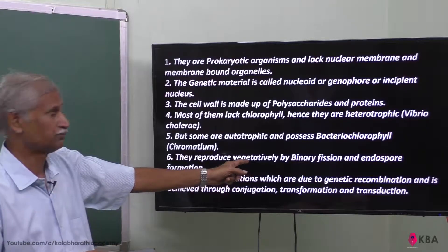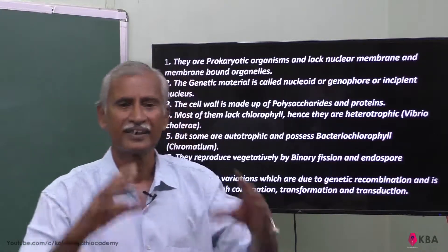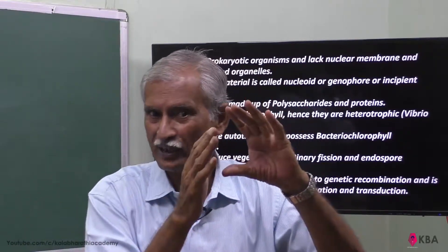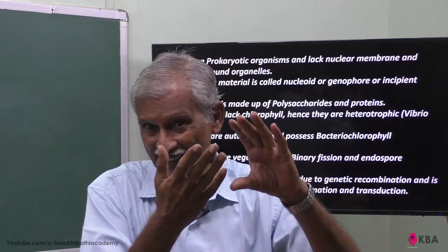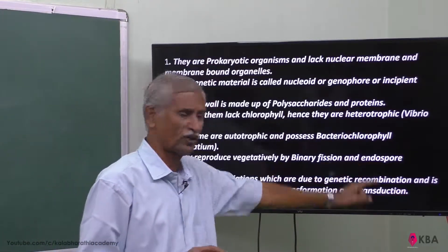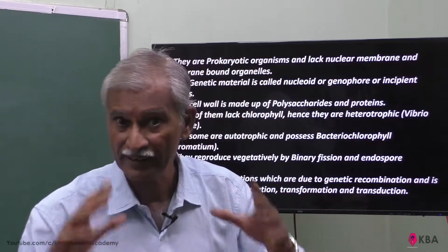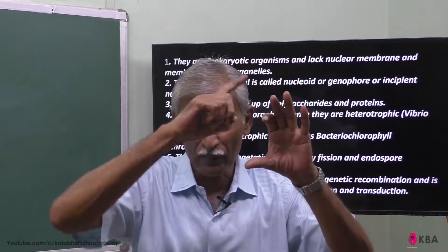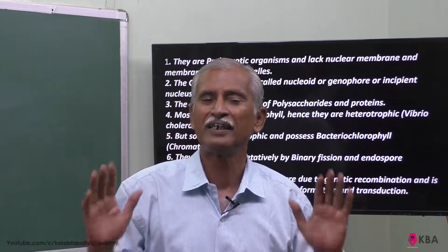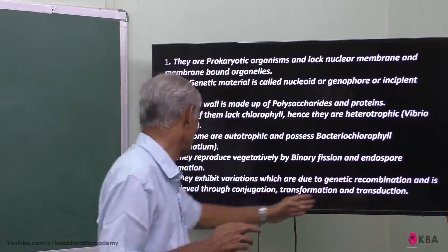Bacteria reproduce vegetatively by binary fission and endospore formation. In binary fission, the bacteria replicate their DNA and divide. Endospore formation occurs when bacteria are in unfavorable external conditions — they form spores with no metabolic activity to survive harsh environments.